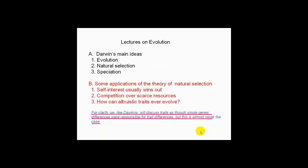That's the end of this first part of the evolution lecture. I want to go on now to the second part, which covers some applications of the theory of natural selection. There are going to be a number of take-home messages. We're going to talk about three different things. The first example illustrates that, at least when taken at face value, the theory of natural selection makes animals which have traits in which self-interest usually wins out.